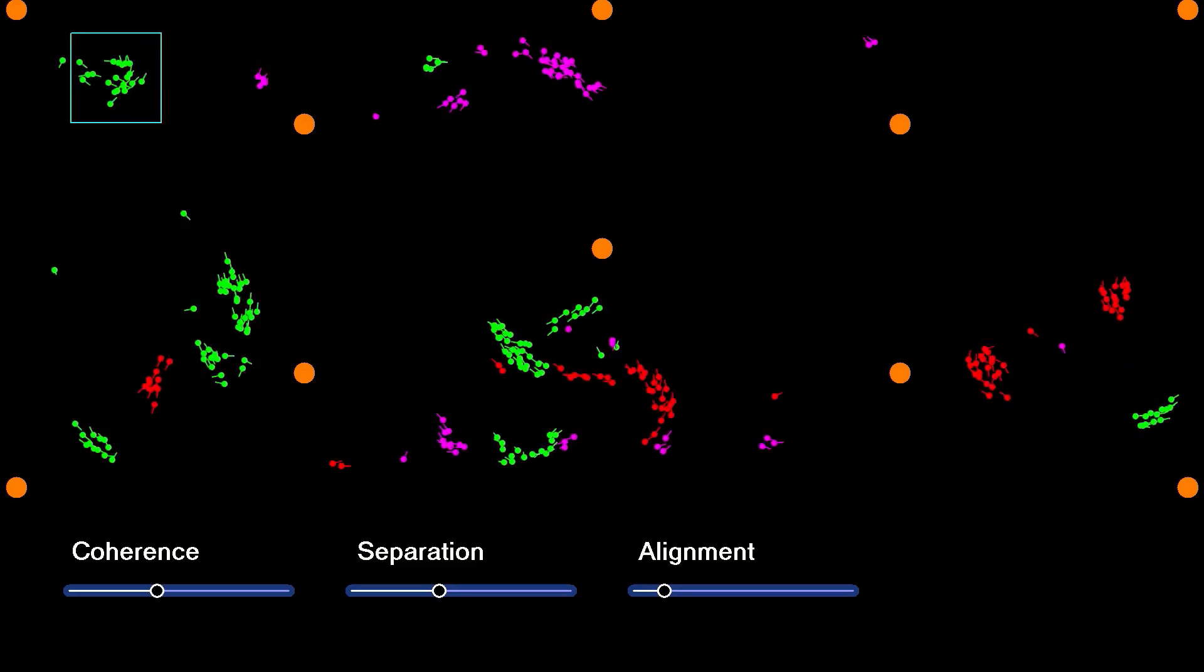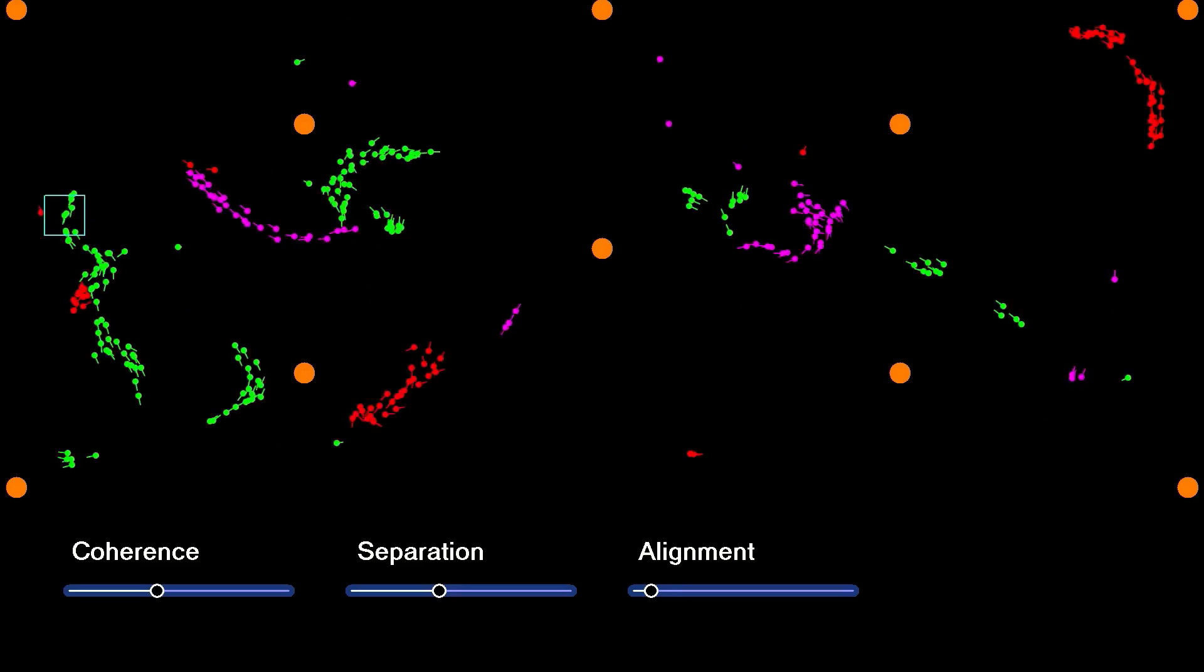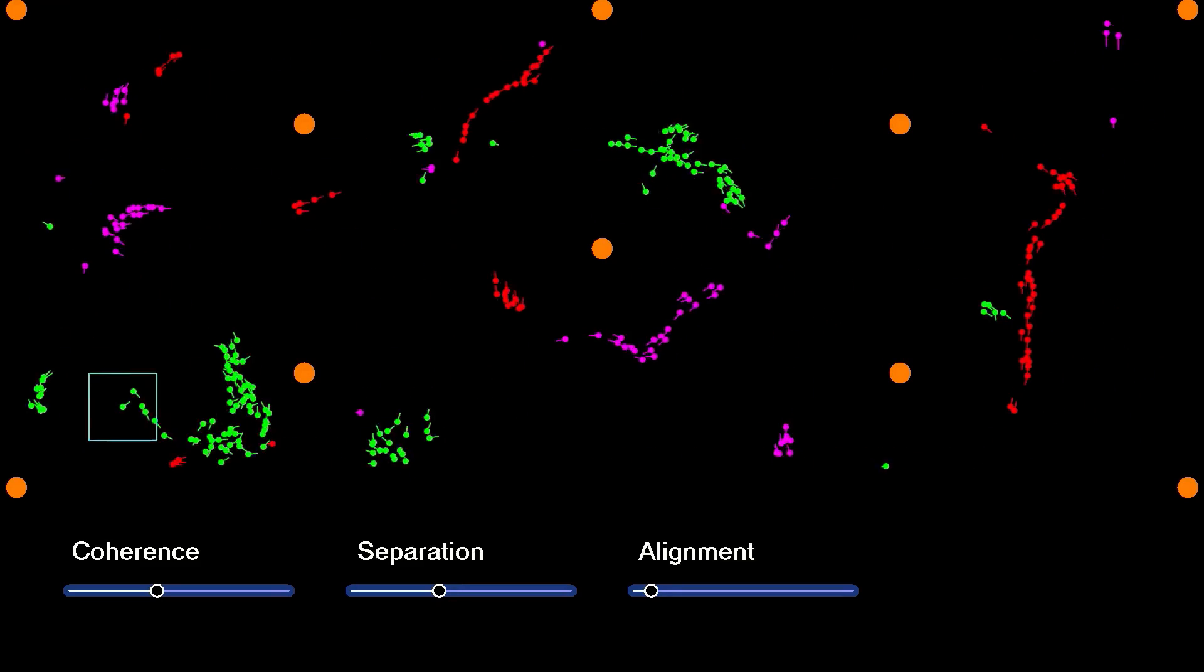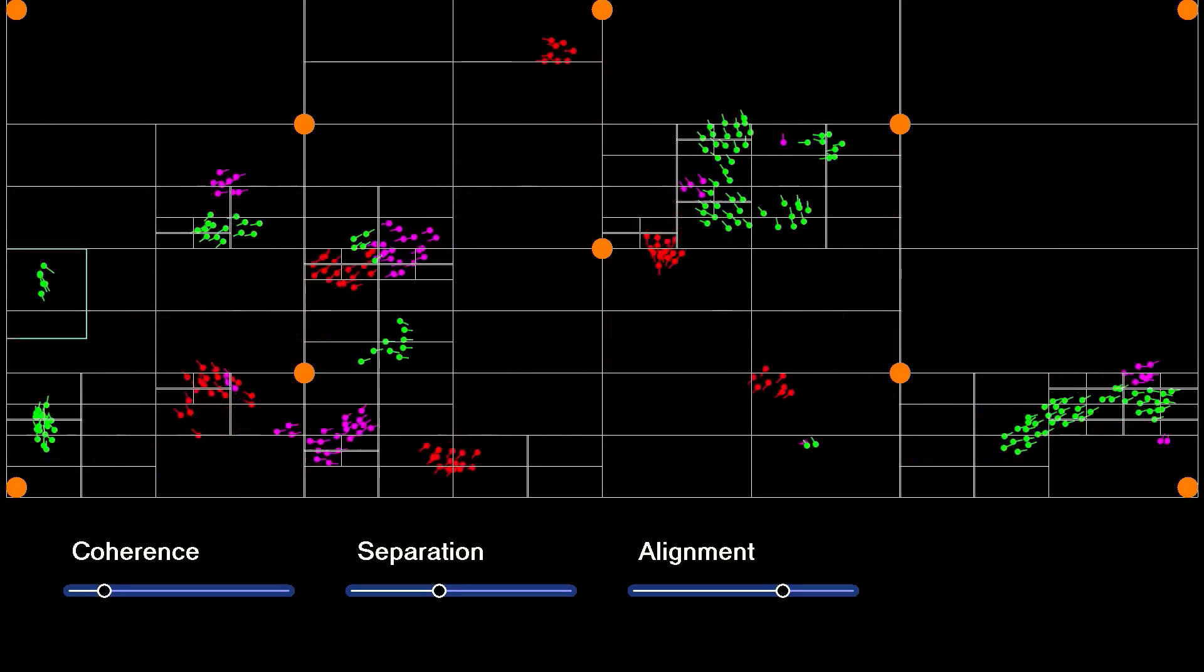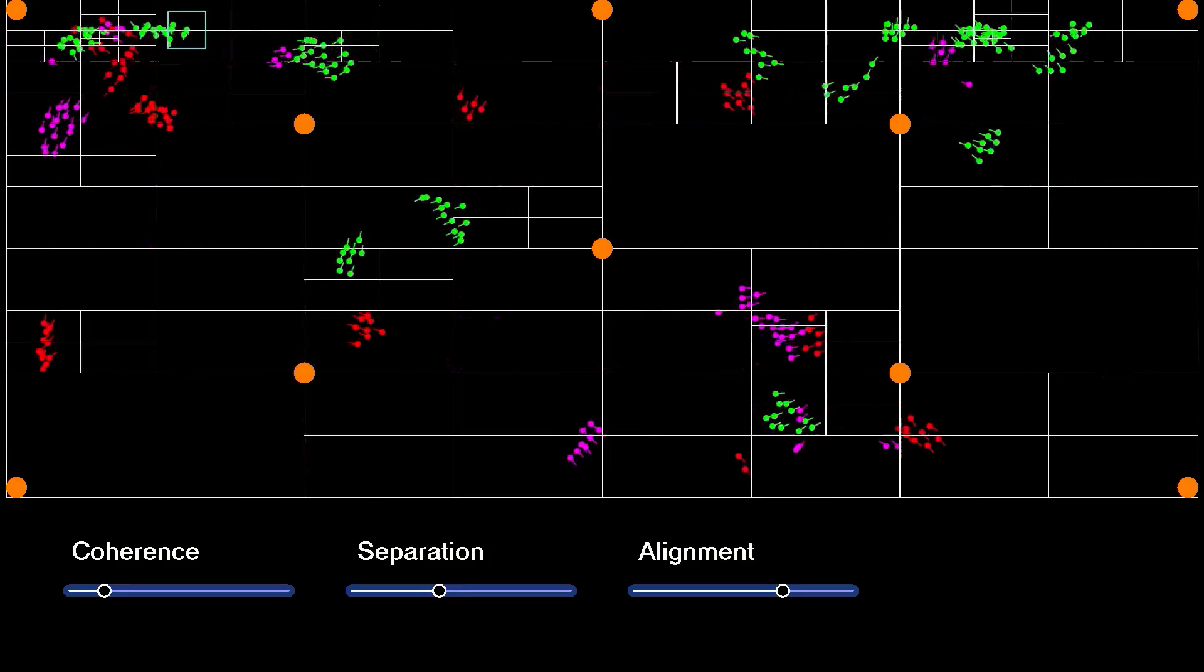So if you only have 10 Boids, that's 100 checks. 50 Boids is two and a half thousand checks, and well, you can see the problem. By the time you get up to 1000 Boids, you'll need to do a million checks to determine who's your neighbor.